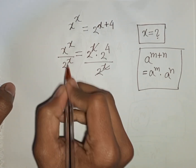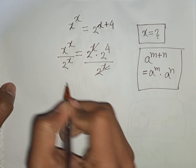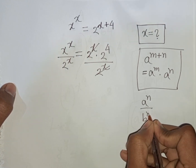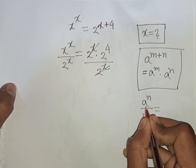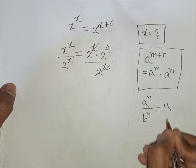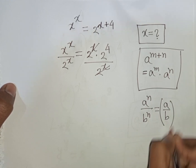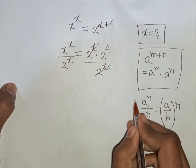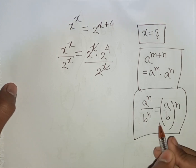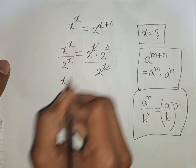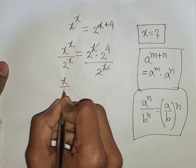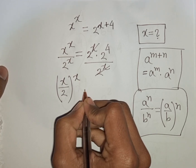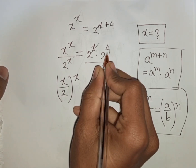From here we see x and x — same power but different base. Remember this exponential rule: a power n over b power n is equal to (a over b) to the common power n. That means same power but different base. So according to this formula, you can write here: x over 2, bracket, common power x is equal to 2 power 4.